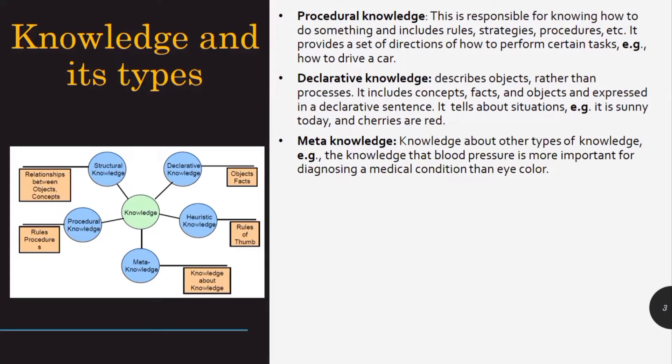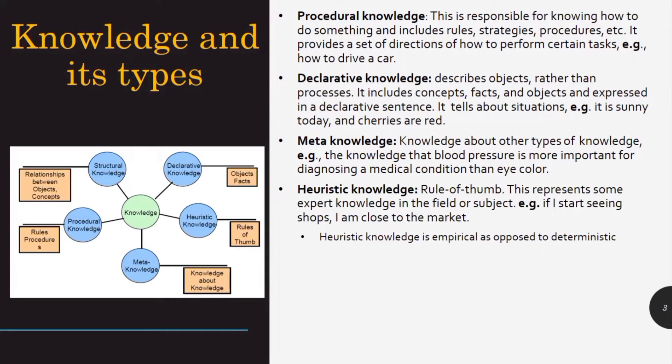Another type is meta knowledge. Meta knowledge means knowledge about other types of knowledge or knowledge about the knowledge. For example, the knowledge that blood pressure is more important for diagnosing a medical condition than eye color. Heuristic knowledge is also a type of knowledge. It's the rule of thumb. It represents some expert knowledge in the field or subject. For example, if I start seeing shops, I'm close to the market. Heuristic knowledge is empirical as opposed to deterministic knowledge.